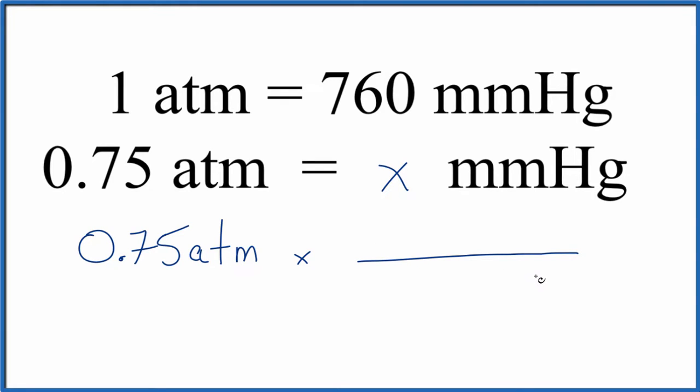So we want to cancel out atmospheres, so we're going to write that on the bottom, and we're looking for millimeters of mercury. That's what we want to be left with, so that'll go on the top, and we know that one atmosphere is equal to 760 millimeters of mercury. So this is our conversion factor.